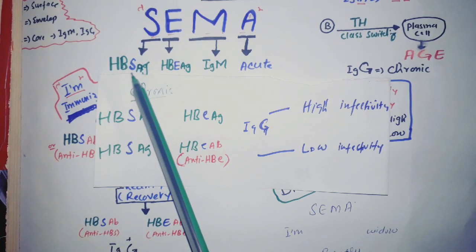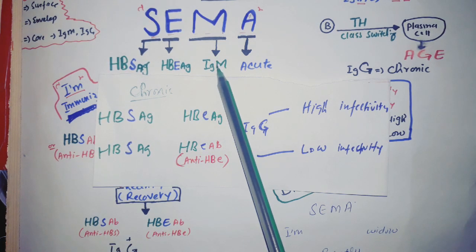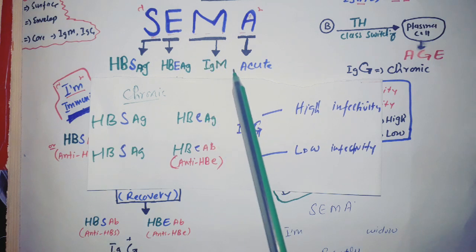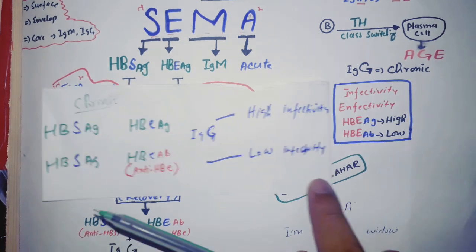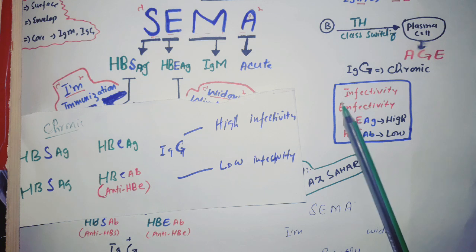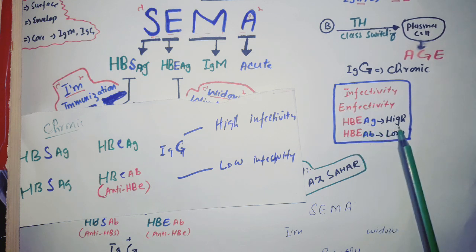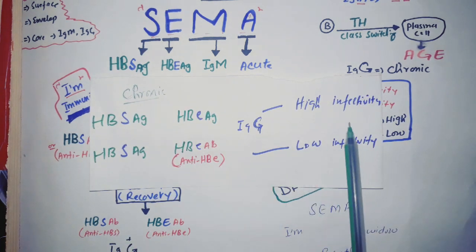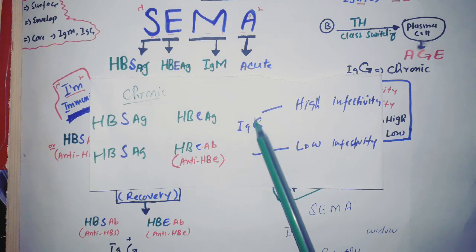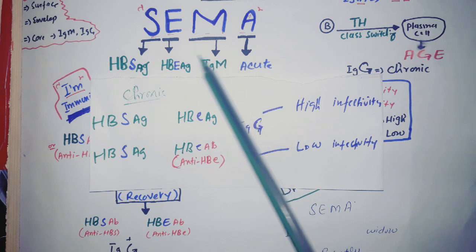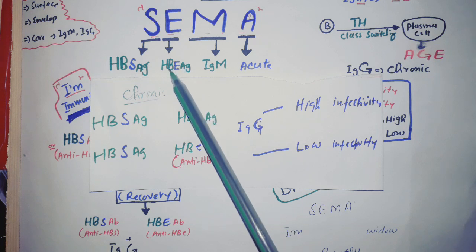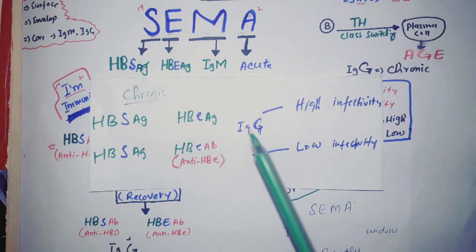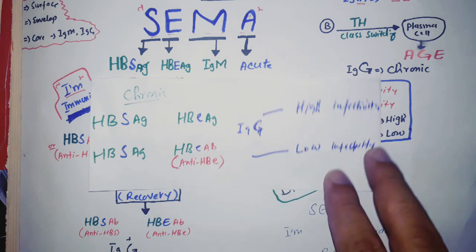For chronic infection, it is the same as acute — HBS antigen and HBE antigen — but instead of IgM we put IgG, because IgG appears in chronic or late infection. Now, the E antigen is related to infectivity, meaning transmissibility. If HBE antigen is present, there is high infectivity. If antibodies against HBE are present, there is low infectivity. So chronic infection has two types: high infectivity and low infectivity.